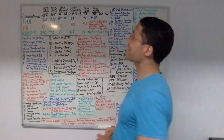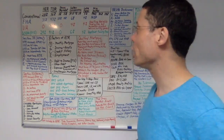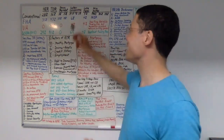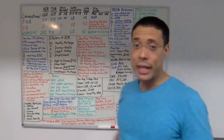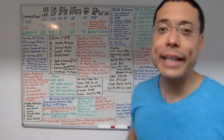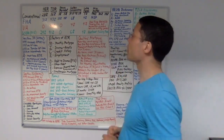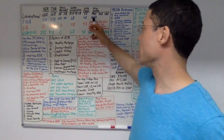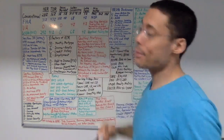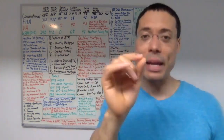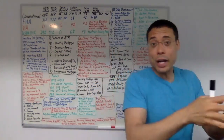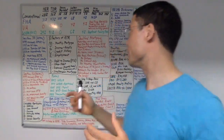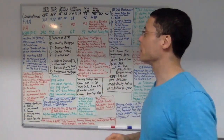Regarding seller concessions on an FHA loan, the maximum seller concession is 6%. The late fee for an FHA loan is 4%. As a side note, FHA loans have MIP — mortgage insurance premium. There are two types: upfront MIP and ongoing MIP.